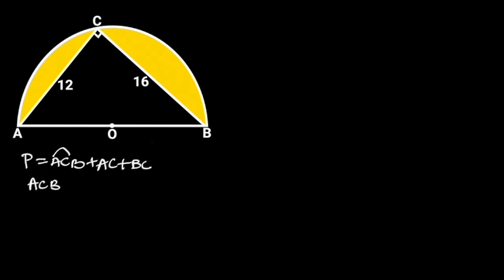The length of arc ABC is equal to pi radius. So, the perimeter of the shaded portion will be equal to pi radius, plus AC, plus BC. AC is equal to 12, and BC equal to 16.